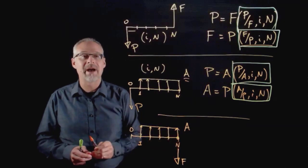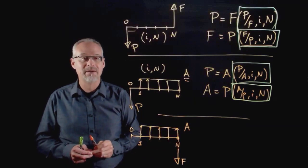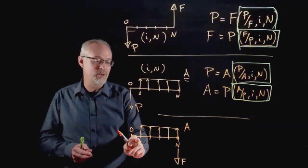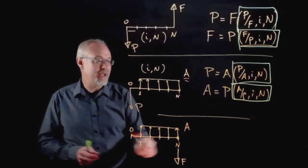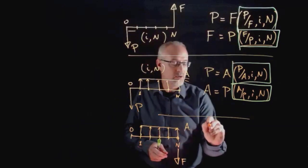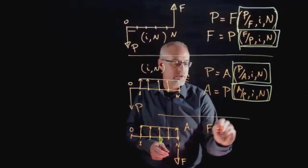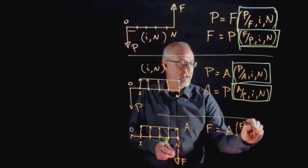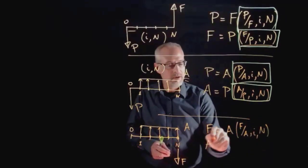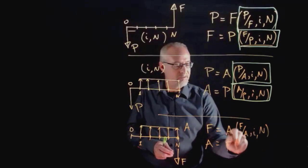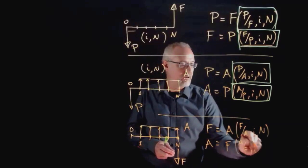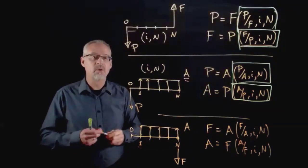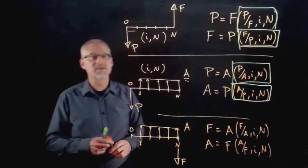For the F given A and A given F, the F is positioned on the cash flow diagram at the same point in time as the last A payment, and nothing happens at time t equals zero. The formulas we'd use are F equals the annuity times the F given A, i, n, or A equals F times the A given F, i, n.